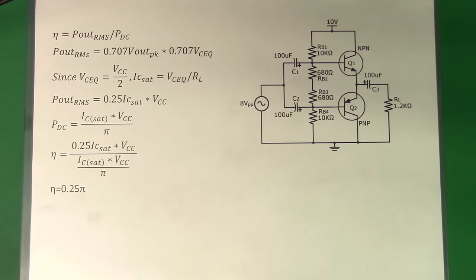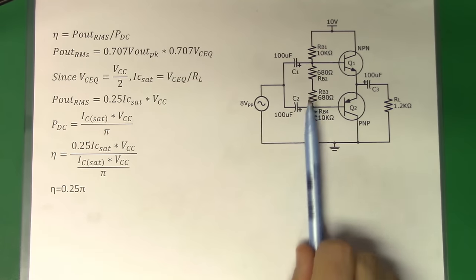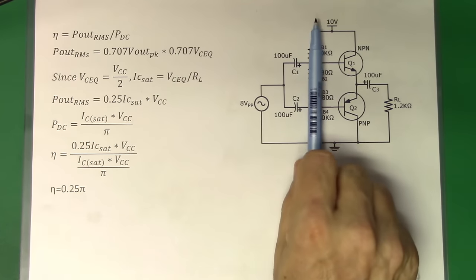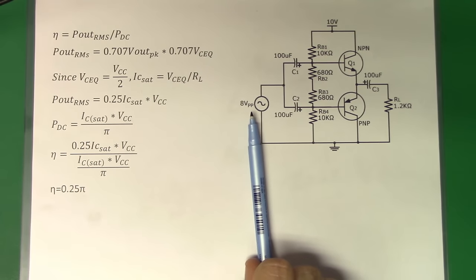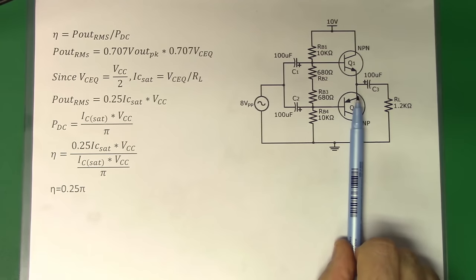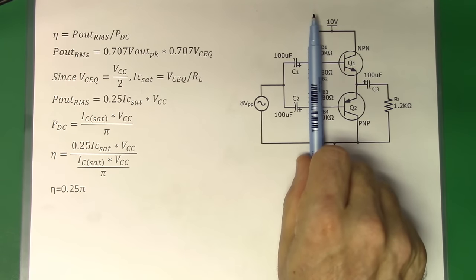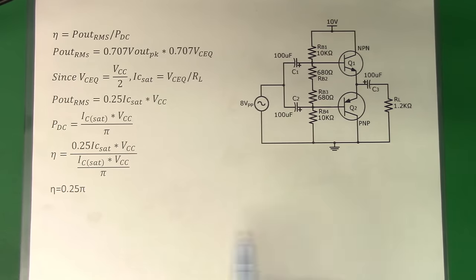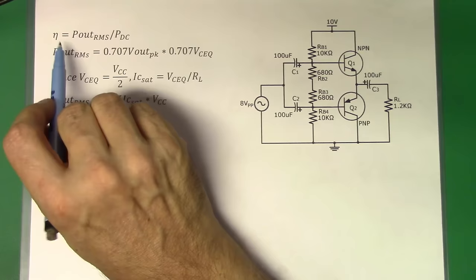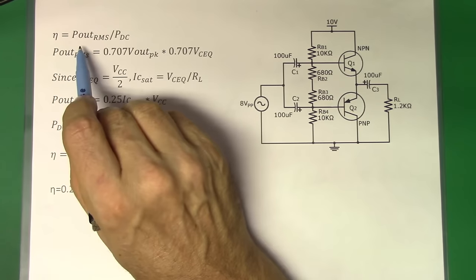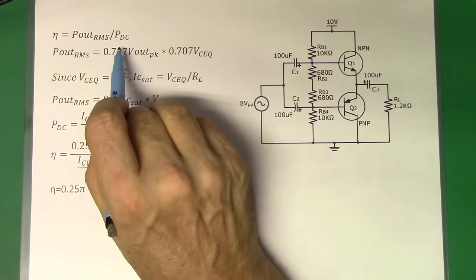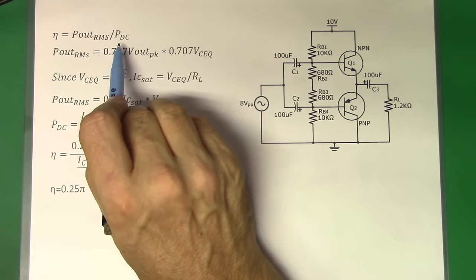The maximum theoretical efficiency of this circuit is a little bit over 78.5%. When we include a biasing network as I've done here, you're actually going to lose some efficiency. If I had eliminated this biasing network and let the 8 volt peak-to-peak input signal do the biasing of the transistor, then we would be able to get that 78.5% efficiency. But for right now, let's go through this circuit and imagine that this bias network is not there and see how they came up with that 78.5% efficiency. Eta is a measure of the efficiency of a circuit given the power out in RMS divided by the power that the DC supply had to give to the circuit.